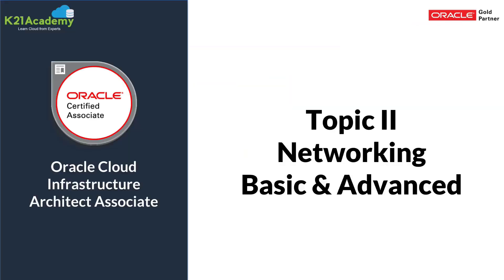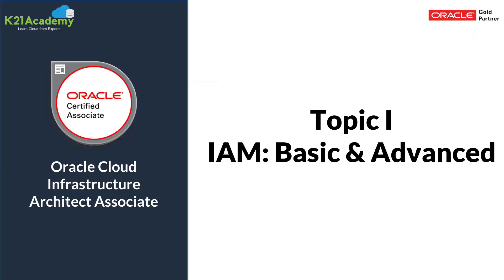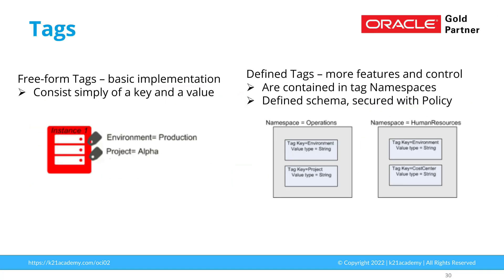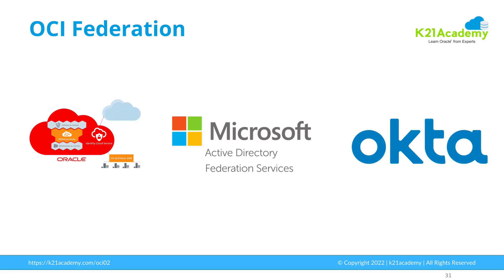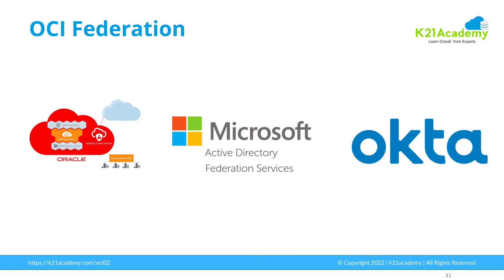Now before I cover this topic about networking including basic and advanced networking — if you have not seen the first episode on Identity and Access Management, where I covered users, groups, principal, compartment, policies and tags, including federation with third parties Oracle IDCS, Microsoft Active Directory Federation Service and Okta in Oracle Cloud Infrastructure — then have a look at k21academy.com/OCI13. I've covered all this in the first episode.